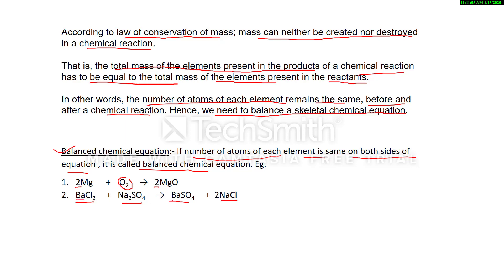Similarly for BaCl₂ + Na₂SO₄ → BaSO₄ + 2NaCl: barium is one atom on each side; chlorine appears twice in Cl₂, and NaCl is multiplied by 2, giving two chlorine and two sodium atoms on the product side, matching Na₂ on the reactant side; sulfur is one atom and oxygen is four atoms (as sulfate) on both sides. Therefore this is a balanced chemical equation.